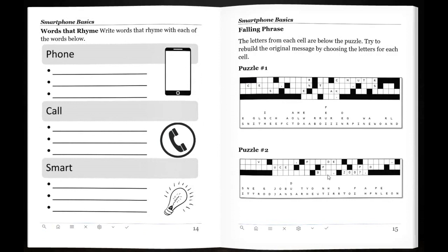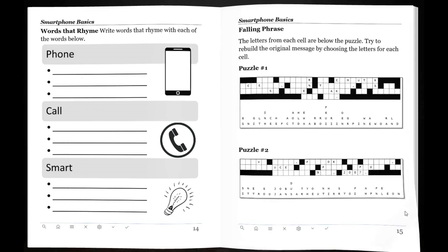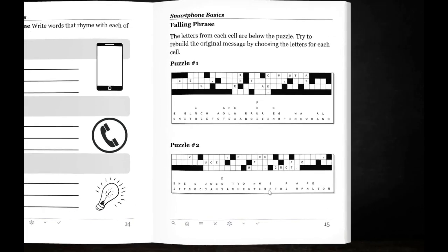Fallen phrase. I think these are kind of a challenge as well. The letters, this kind of simulates letters falling out of the puzzle boxes here, and it just reads as a sentence across the top. Again, smartphone related. So these are kind of fun.